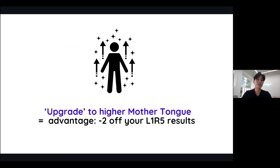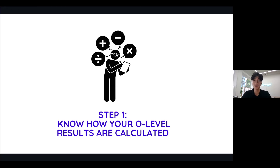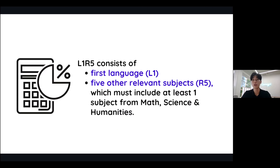Now here comes the fun part — choosing the number of sciences and humanities, as well as whether to take A-math or not. To get a better understanding of your subject combination, you need to understand how your O-level results are calculated in the first place. If you're looking to enter a JC via JAE, which is your joint admission exercise after your O-levels, your admission will be based on your L1R5 score. Your L1R5 takes into account your first language, which is usually English, and five other relevant subjects, which must include at least one of your math, science, and humanities.